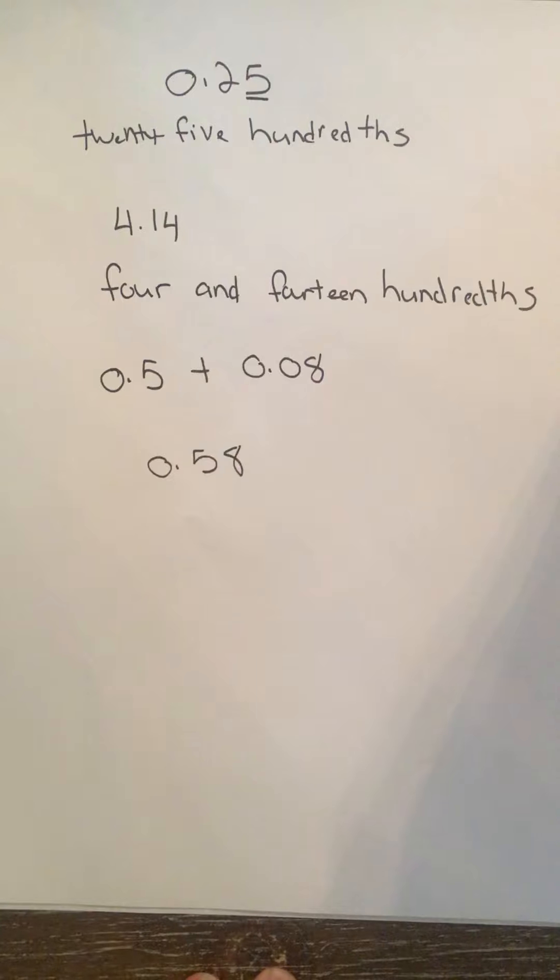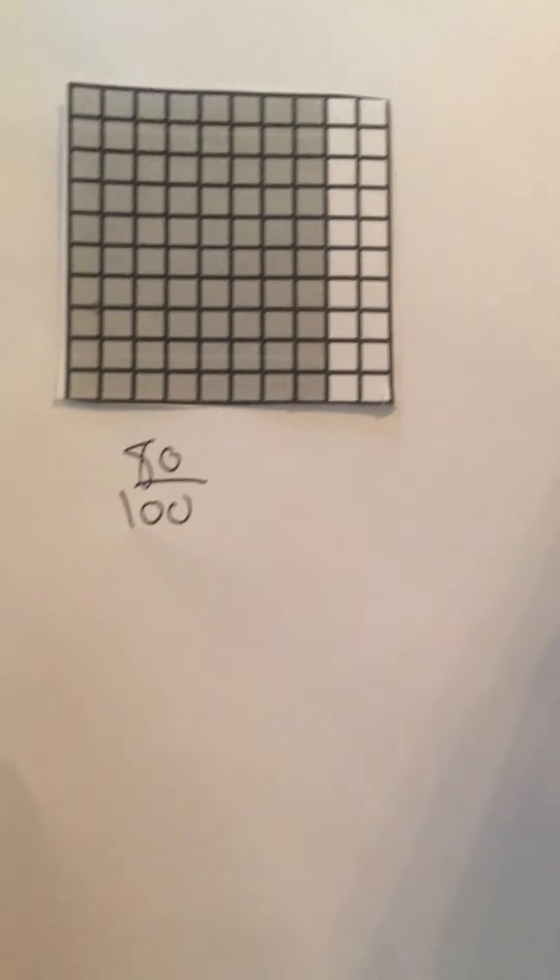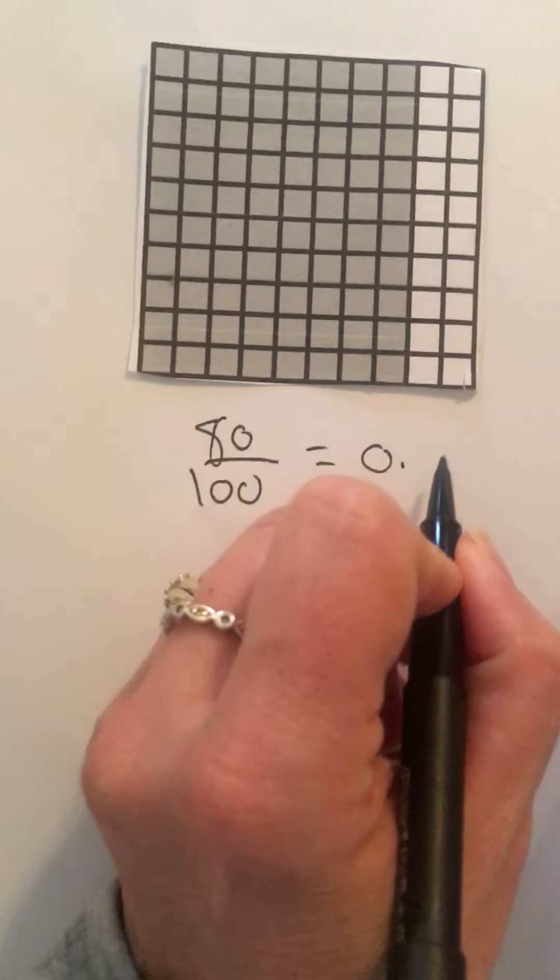I also might show you pictures and ask you to tell me what decimal those images stand for. For example, if I give you a picture — we know this is a whole, and this is a ten-by-ten grid, so there are a hundred pieces in the whole. We think about how many pieces are shaded out of the whole. We have 80 that are shaded out of the whole, so this would be eighty hundredths. I'm going to ask you to write this as a decimal: 80 hundredths equals 0.80.